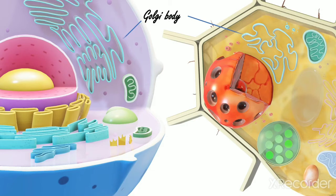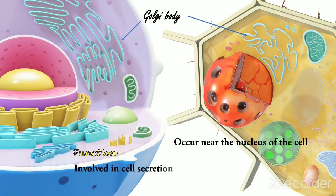Second, Golgi bodies. They occur near the nucleus of the cell. Function: They are involved in the cell secretion.